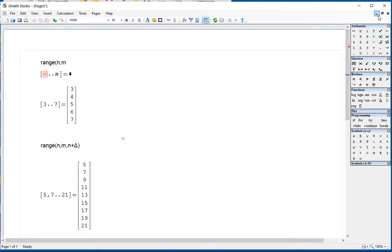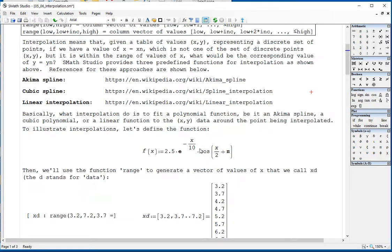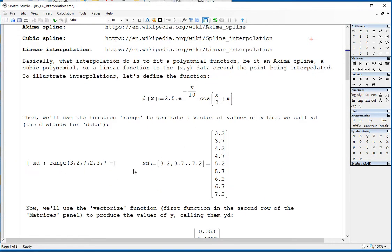And I'm using it here to produce a vector of values of x. I'm going to call it xd. This will be my x data. And so I'm going to produce a range of value between 3.2 and 7.2 in increments of 0.5. Just to demonstrate how to do this, I say xd colon range 3.2 comma 7.2 comma 3.7 equals.